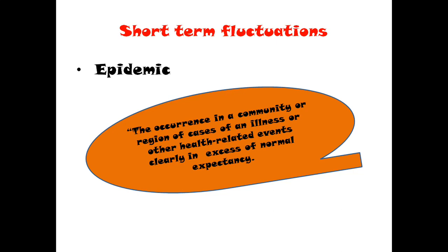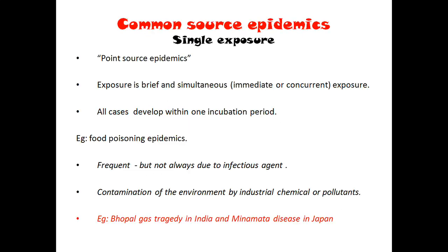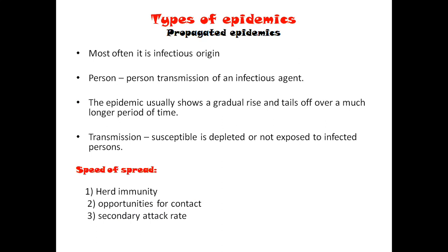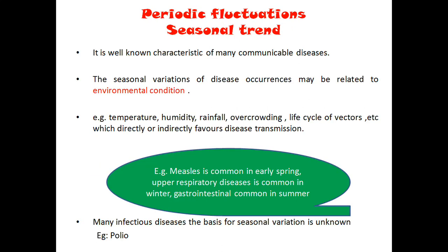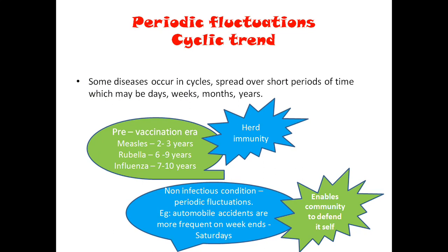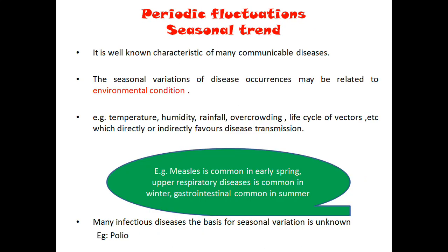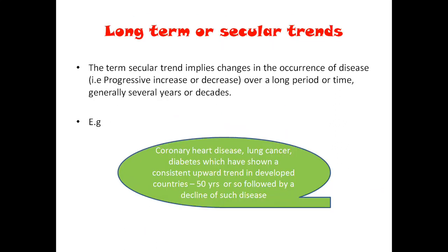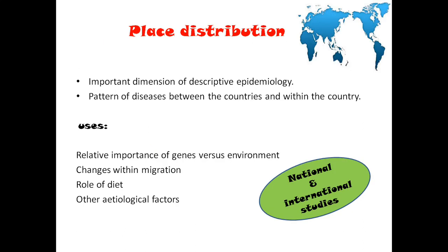Seasonal trends and periodic fluctuation: we have seasonal trend and cyclic trend. Seasonal trend includes measles and respiratory diseases. Cyclic trends include pre-vaccination and post-vaccination era diseases and automobile accidents. Long-term trends include cancer — seen in developed countries. So we have covered time distribution. Now, place.